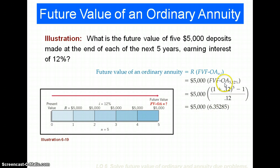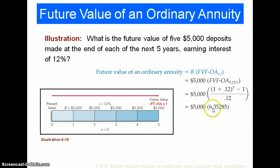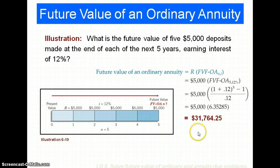The other way we can solve for that is by doing the math directly. We take our payment and multiply that by one plus the interest rate raised to the fifth power, minus one, divided by 12%. Doing the math on that, I get 6.35285, and multiplying that by the payment gives me $31,764.25.